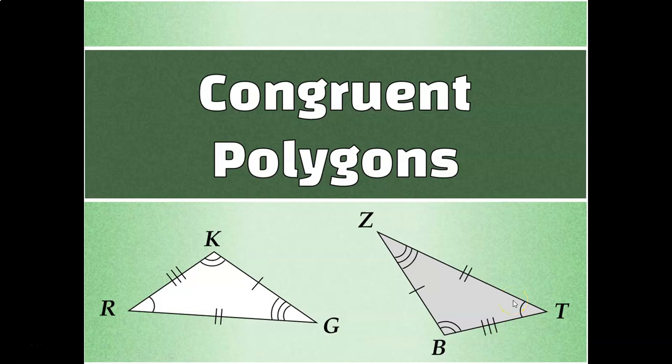Let's talk about what it means for two polygons to be congruent. All of their pairs of corresponding angles are congruent, and all of their pairs of corresponding sides are congruent. That would mean that the shapes are congruent.